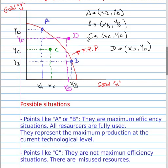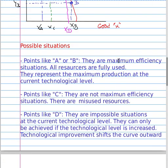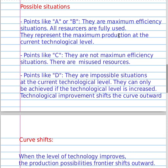Points like D are impossible situations at the current technological level. They can only be achieved if the technological level is increased. Technological improvement shifts the curve outward.